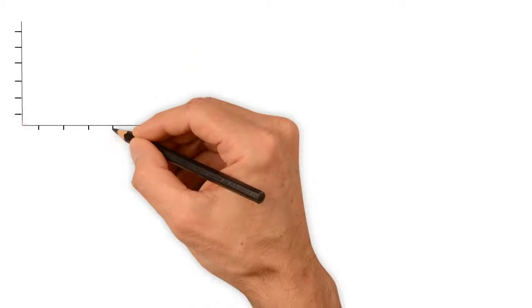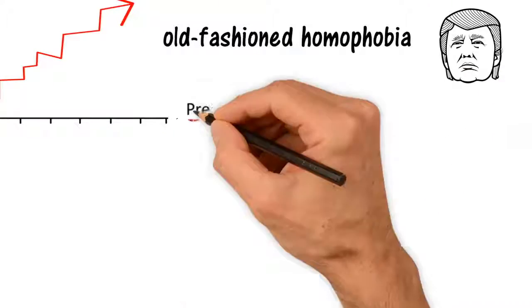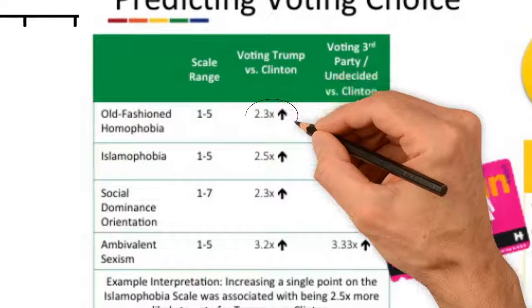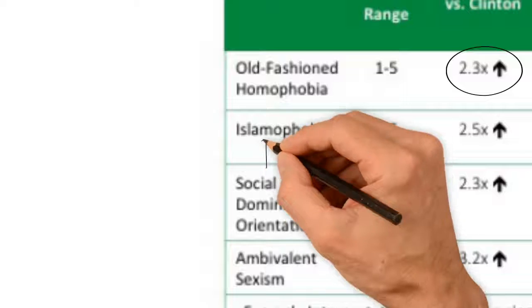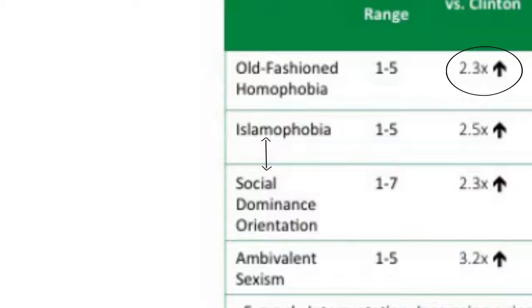A point higher on the measure of old-fashioned homophobia increased likelihood of voting for Trump instead of Clinton by 2.3 times. Higher Islamophobia and social dominance orientation also more than doubled likelihood of voting for Trump instead of Clinton.